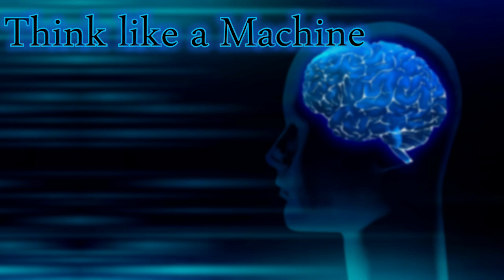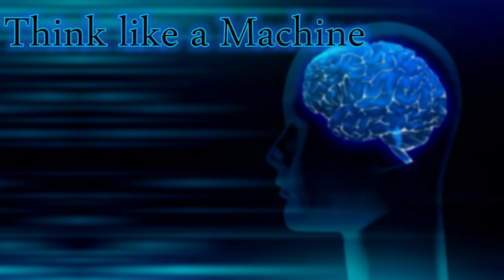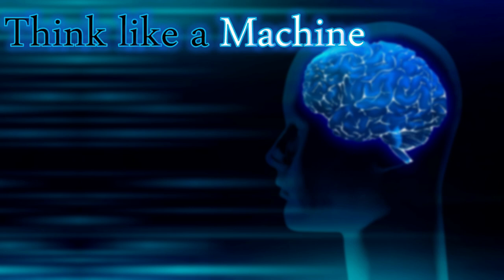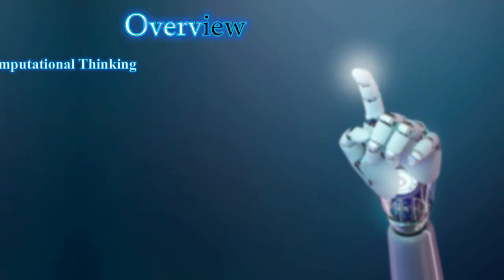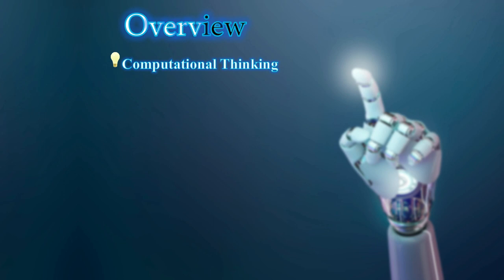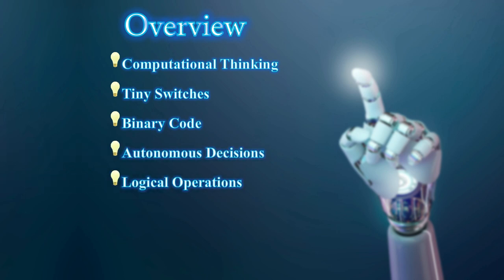In the previous video we talked about humans and machines — comparing their abilities. In this lesson we're going to talk about how to think like a machine. The overview covers: computational thinking, tiny switches and binary code, autonomous decisions, and logical operators.